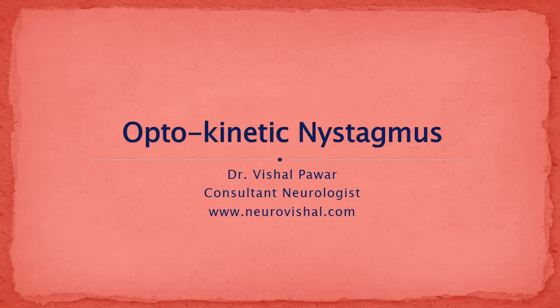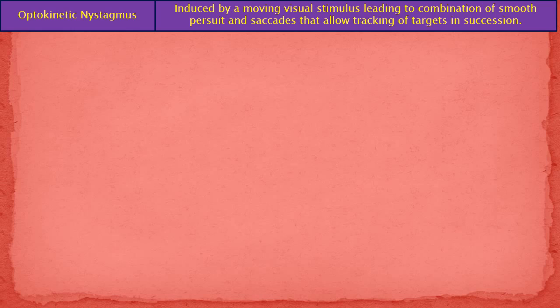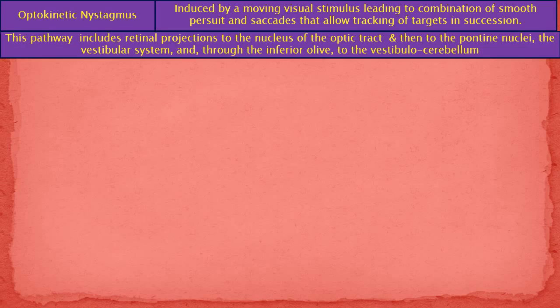In this video I am going to discuss about optokinetic nystagmus. Optokinetic nystagmus is induced by a moving visual stimulus, leading to a combination of smooth pursuit and saccades that allow tracking of targets in succession.